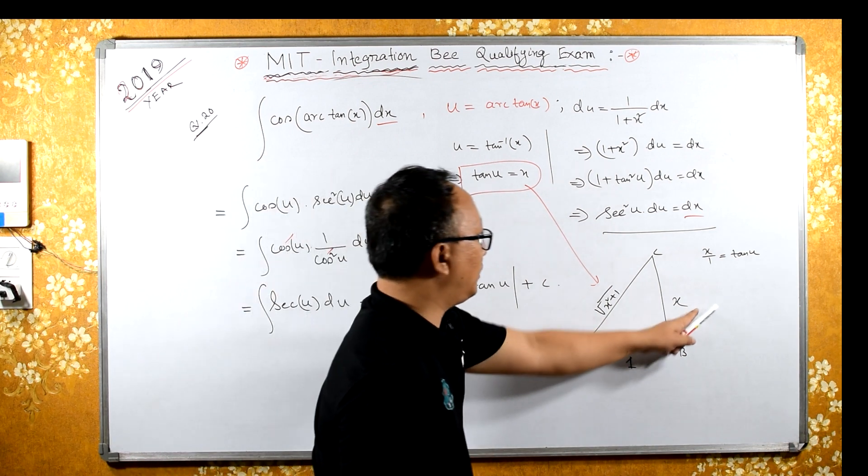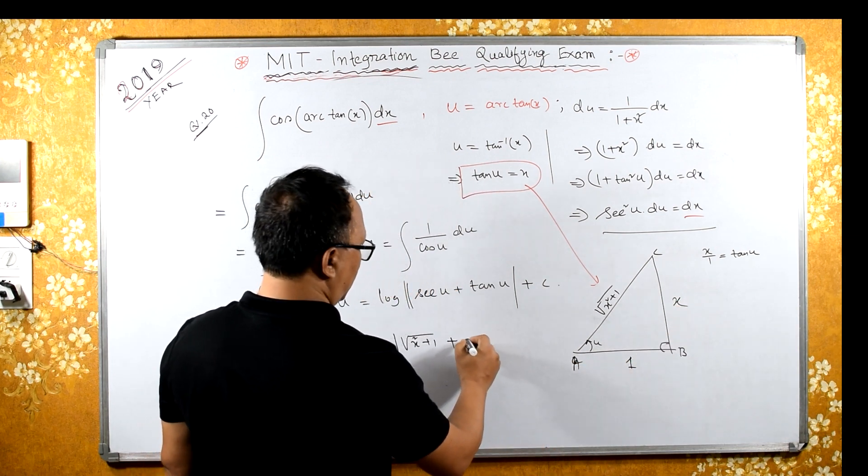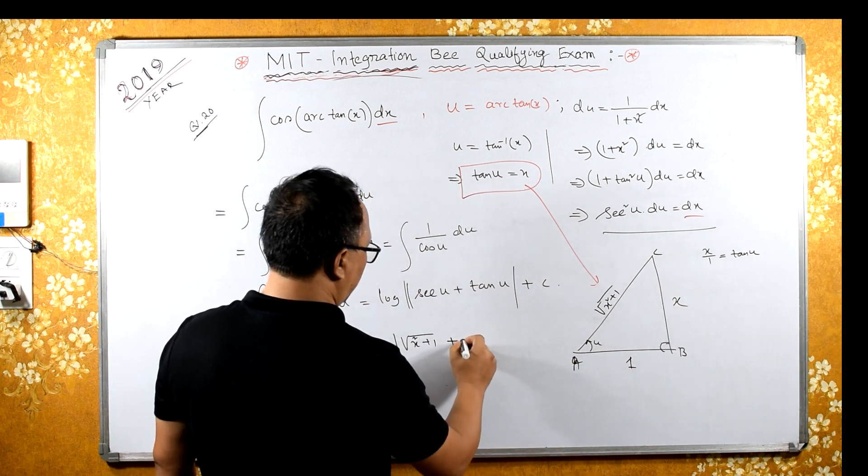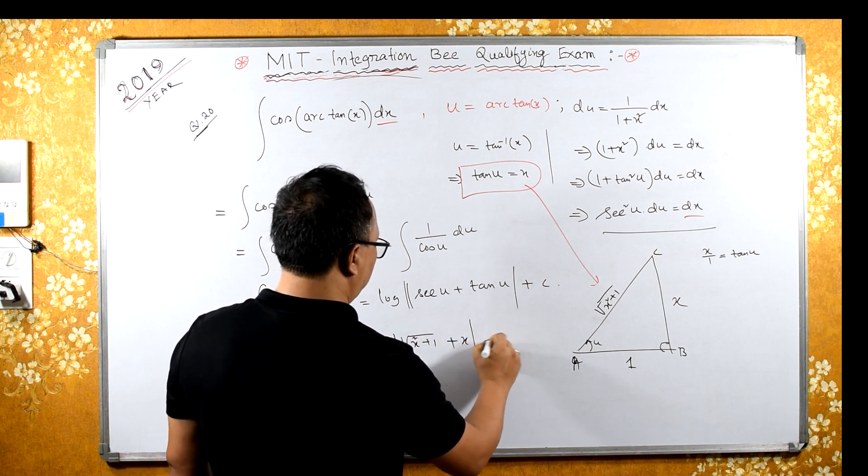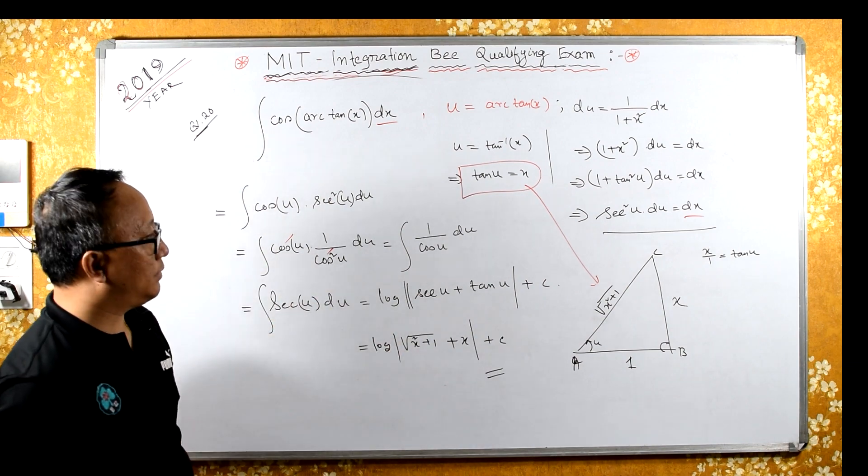Tan is x. So we have log of square root of x squared plus 1 plus x plus constant C. This is the required answer for question number 20.